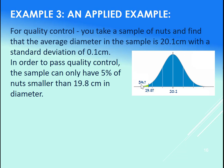So we want at most 5% to be smaller than 19.8 centimeters. What's going to happen if they are smaller? We can't use them. Notice you might say, well, why do we even allow 5%? Don't we want all of the nuts to be usable?